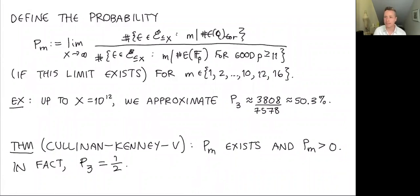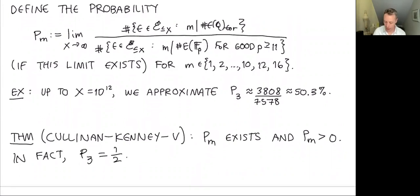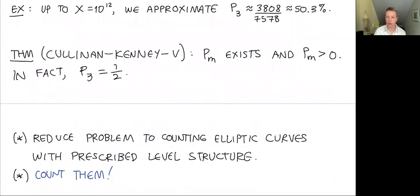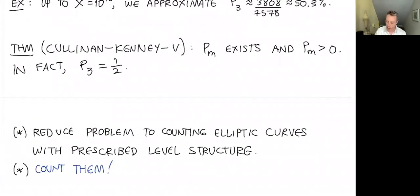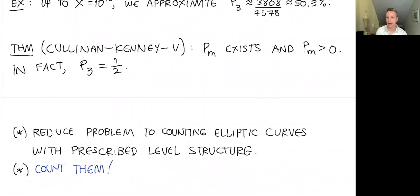So how do you prove a theorem like this? There are basically two things you need to do. First, reduce the problem to counting elliptic curves with prescribed level structure — translating the property into a question about the image of Galois. I'll skip that step for reasons of time and invite you to read our paper. I'm going to focus today on the counting question, which is a nice analytic algebraic arithmetic geometry problem.